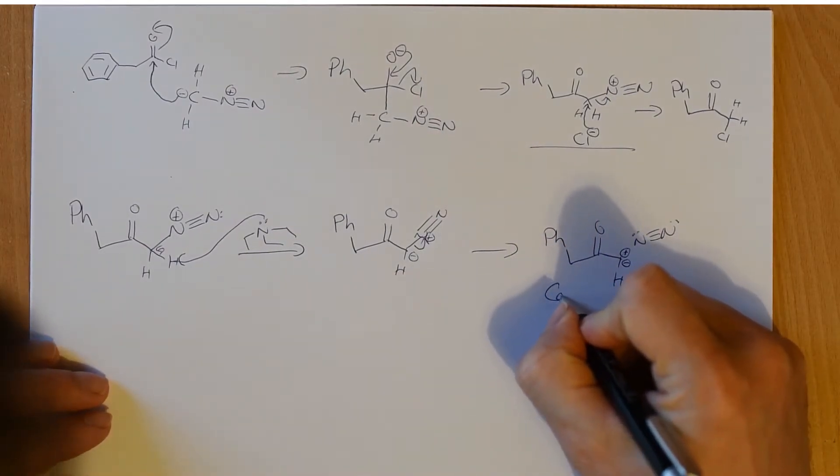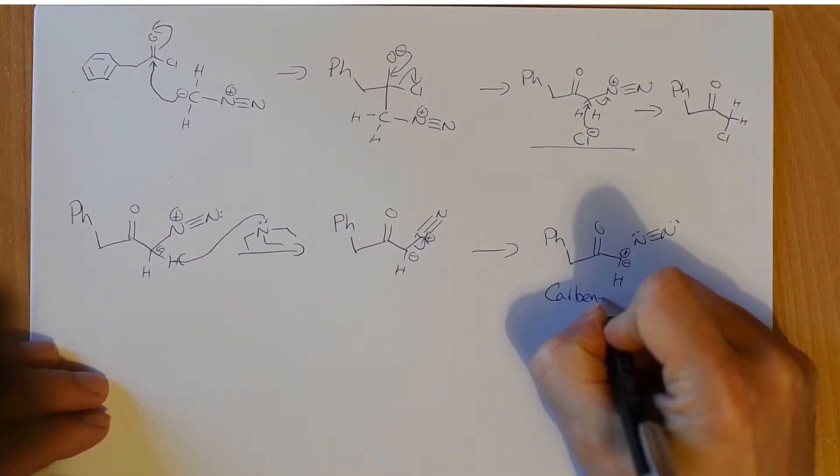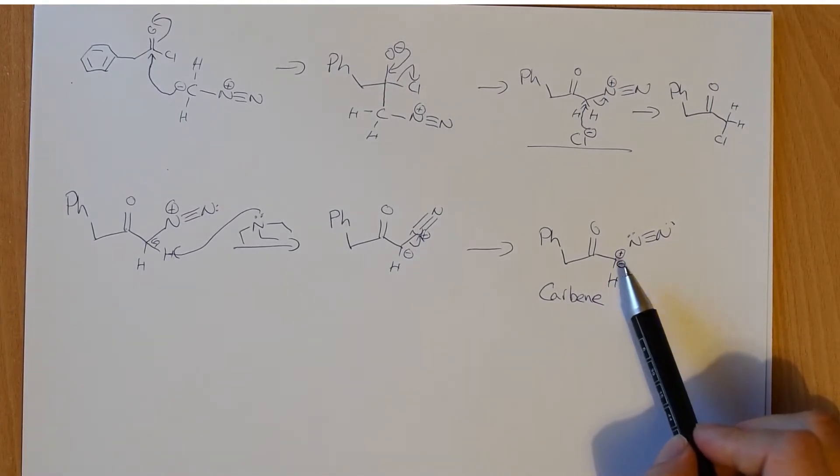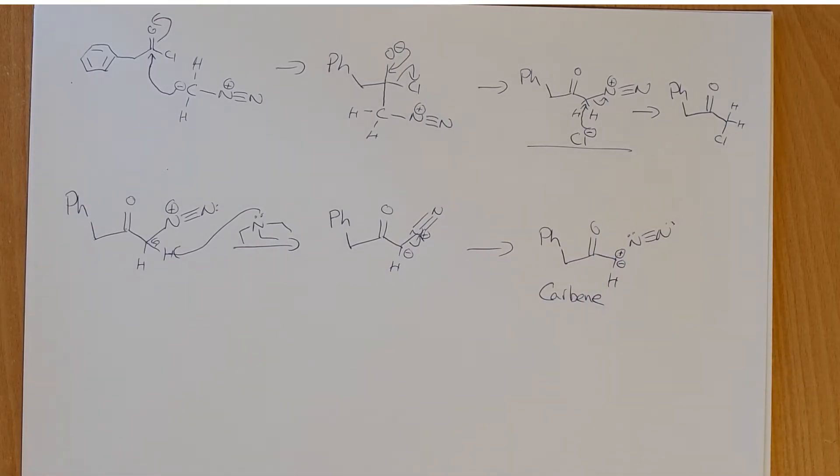Well, this is a carbene. And what we have here is a carbon that is overall neutral, but it only has six electrons in its outer shell. It's short two electrons. And that is a very reactive species.